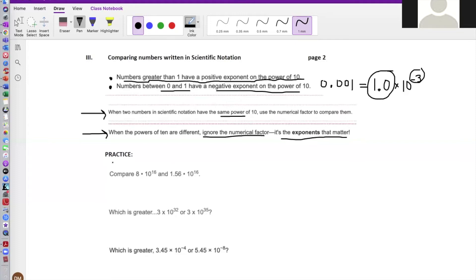So let's do some practice. What if we want to compare 8 times 10 to the 16th power and 1.56 times 10 to the 16th power? Because the power of 10 is the same, notice this is a 16 and this is a 16, we don't have to write the numbers out in standard notation to compare which one is bigger and which one is less. All you have to do is compare the numerical factor. Is 8 bigger or less than 1.56? Because 8 is greater than 1.56, we can then conclude that 8 times 10 to the 16th is greater than 1.56 times 10 to the 16th. Again, because we have the same power of 10, we're going to use the numerical factor to compare the two numbers.